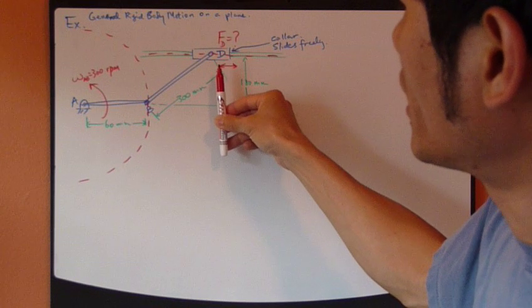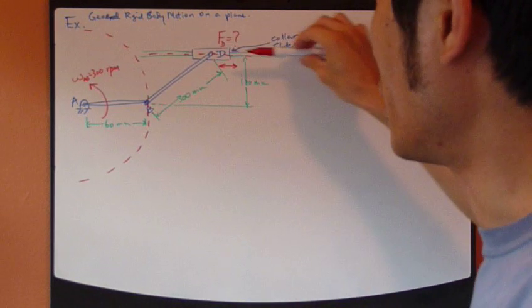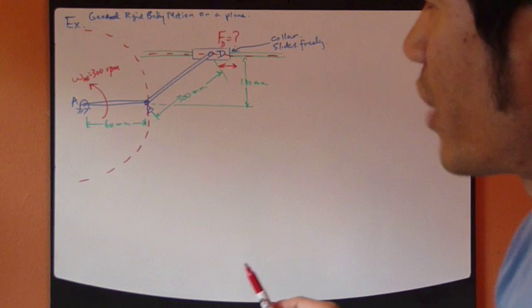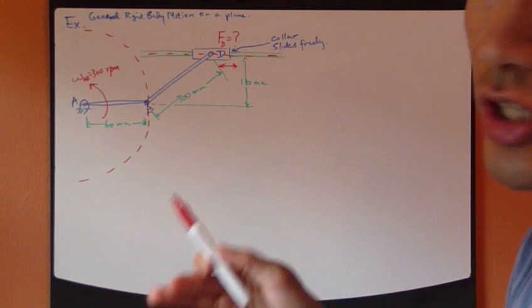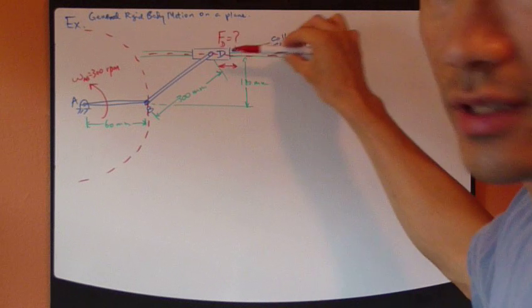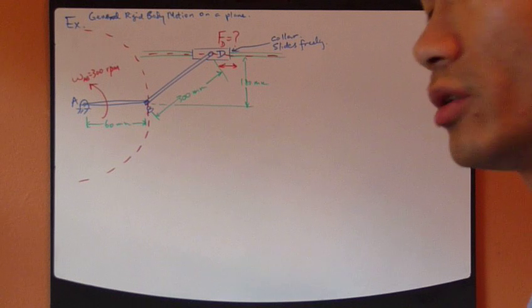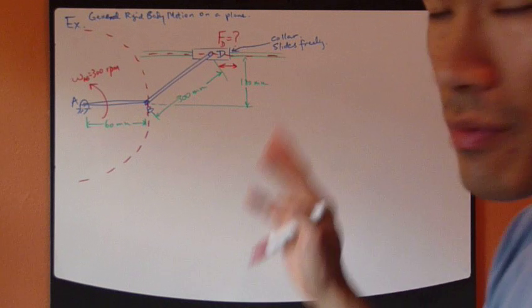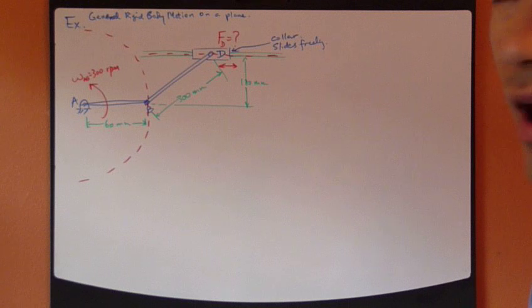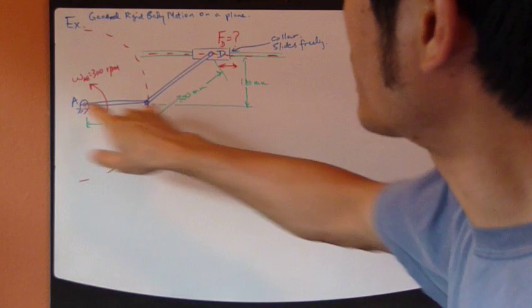This reaction force is pointing either up or down since this collar has traveled along this direction, along this rod which is horizontal. The only reaction force that can exist is vertical because it slides freely, which means there's no friction. So the only force is vertical. We don't know whether it's upward or downward. That's okay. In this example we can illustrate that if you don't know something, assume something, and you'll still be okay.